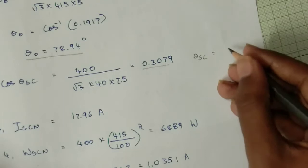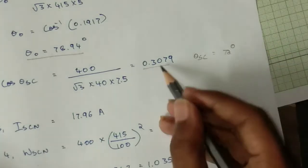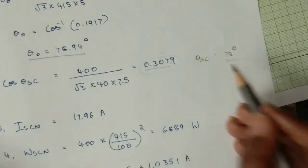Theta of SE value will be 72 degree. You can take the cos inverse of this value, it will become 72 degree.